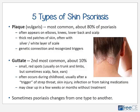The most common type of skin psoriasis, occurring in about 80 percent of patients, is called plaque psoriasis or psoriasis vulgaris. It often appears on elbows, knees, lower back, and scalp, and is characterized by thick red patches of skin with a silvery or white layer of scale, as seen in the graphic. There is an established genetic connection and some recognized triggers.